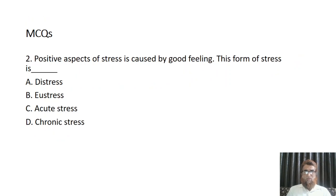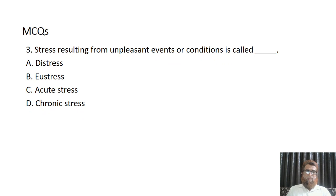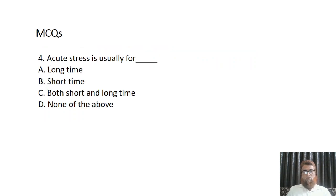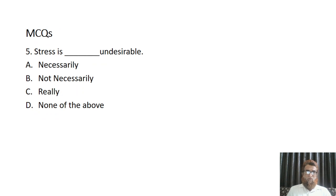Second question: Positive aspect of stress is caused by good feeling. This form of stress is — A) distress, B) eustress, C) acute stress, D) chronic stress. Third question: Stress resulting from unpleasant events or condition is called — A) distress, B) eustress, C) acute stress, D) chronic stress. Fourth question: Acute stress is usually for — A) long time, B) short time, C) both short and long time, D) none of the above.